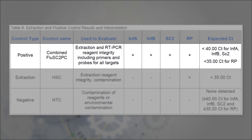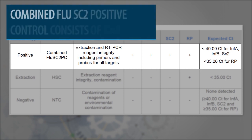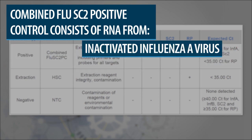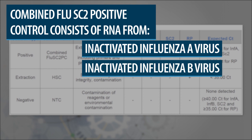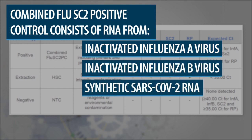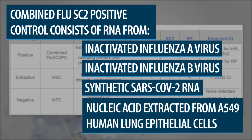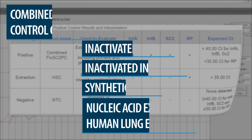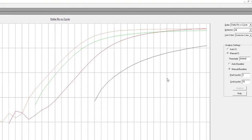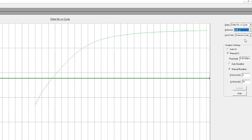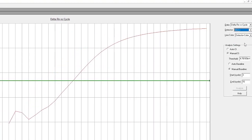If no amplification is seen with the No-Template Control, move on to analysis of the Combined Flu SC-2 positive control well. This control consists of RNA from inactivated influenza A virus, influenza B virus, a synthetic SARS-CoV-2 RNA, and nucleic acid extracted from A549 human lung epithelial cells. The Combined Flu SC-2 should be positive for all targets: influenza A, influenza B, SARS-CoV-2, and RNAs P.